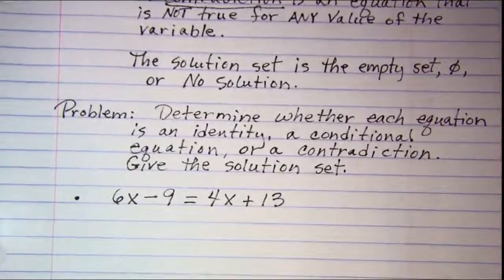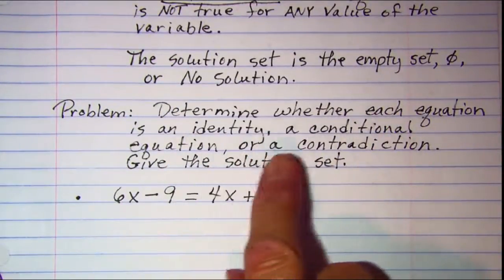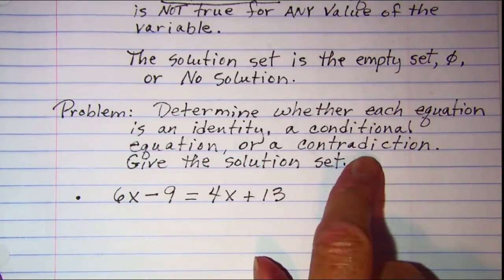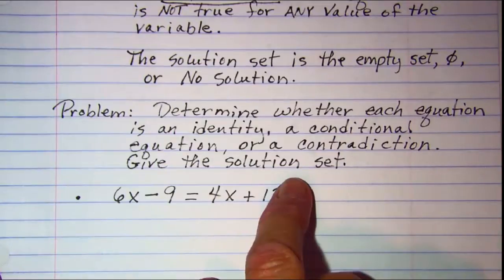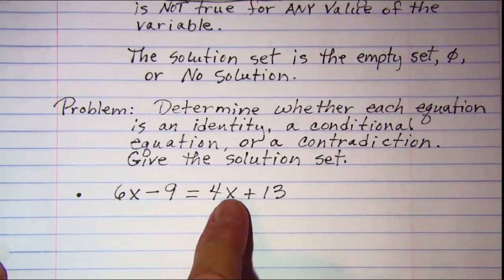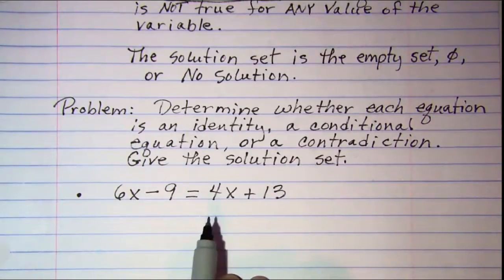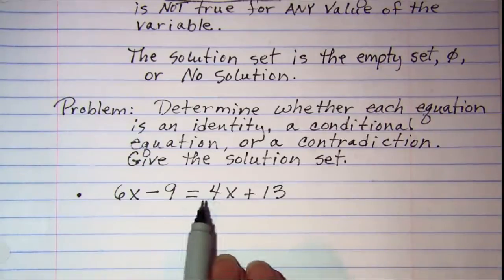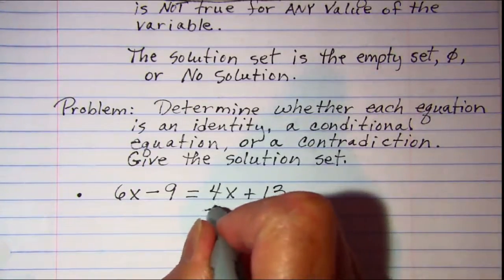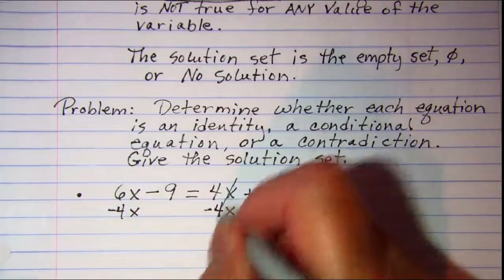Now let's do some problems. We're asked to determine whether each equation is an identity, a conditional equation, or a contradiction, and then give the solution set. Our first one is 6x minus 9 equals 4x plus 13. So we'll begin just by solving this equation like we normally do. Let's subtract 4x from both sides.